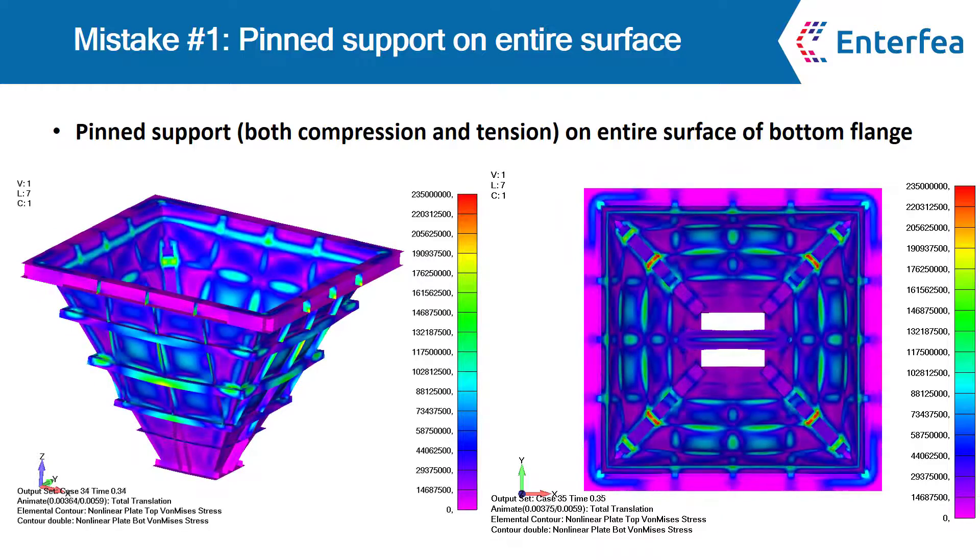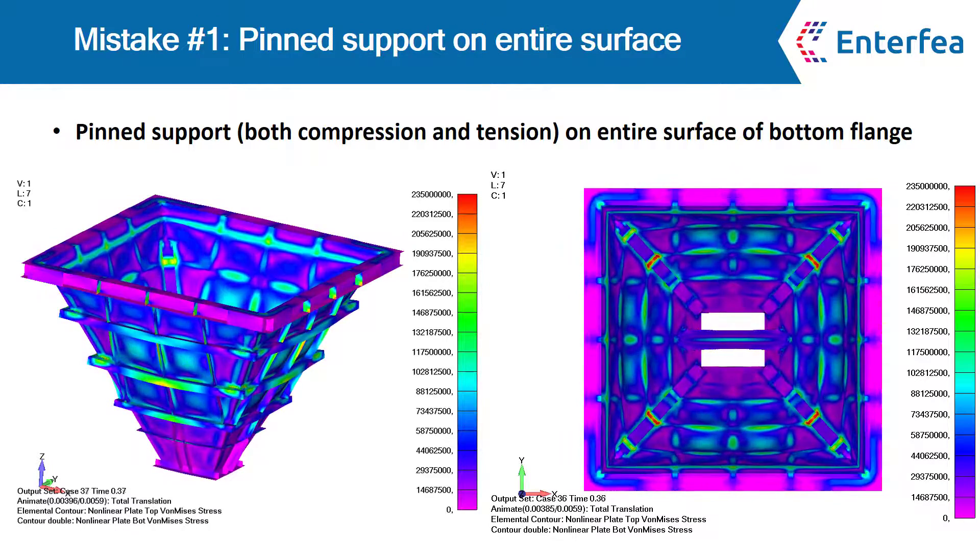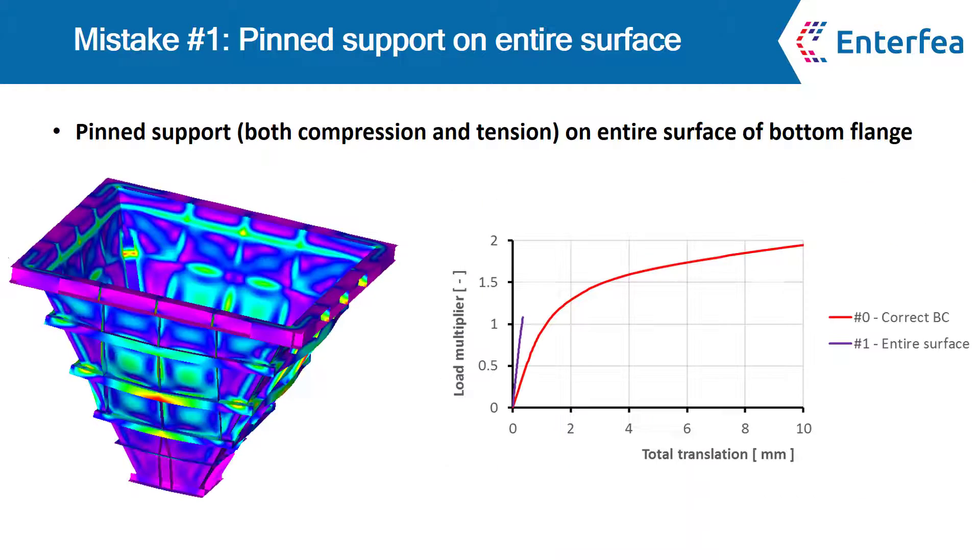This is because we allowed for the tensile force to be carried in the support. This means that the main beams aren't in torsion anymore and the tensile force in the stiffeners stabilize the model even though it shouldn't. Mistake number one is the worst mistake we could make. It made a huge difference.